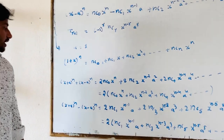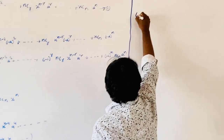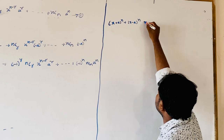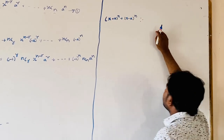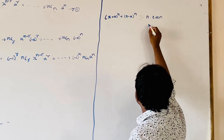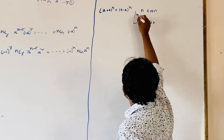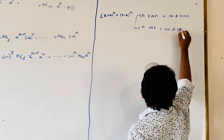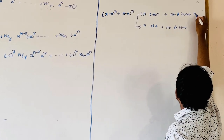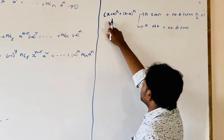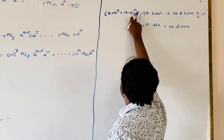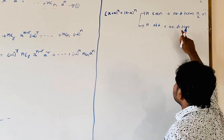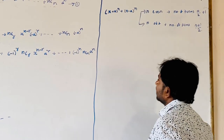Now in the expansion of x plus a all power n plus x minus a all power n, there are two cases: n is even, and n is odd. When n is even, the number of terms is n/2 plus 1. When n is odd, the number of terms is (n+1)/2.